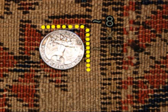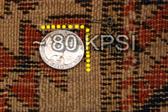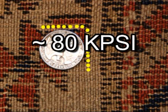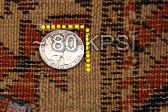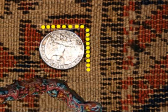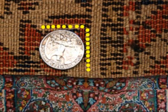When we count the horizontal, we figure there are approximately 8 knots. Counting the vertical, we figure there are approximately 10 knots. Multiplying the two together, we come up with knots per square inch at somewhere around 80 KPSI.